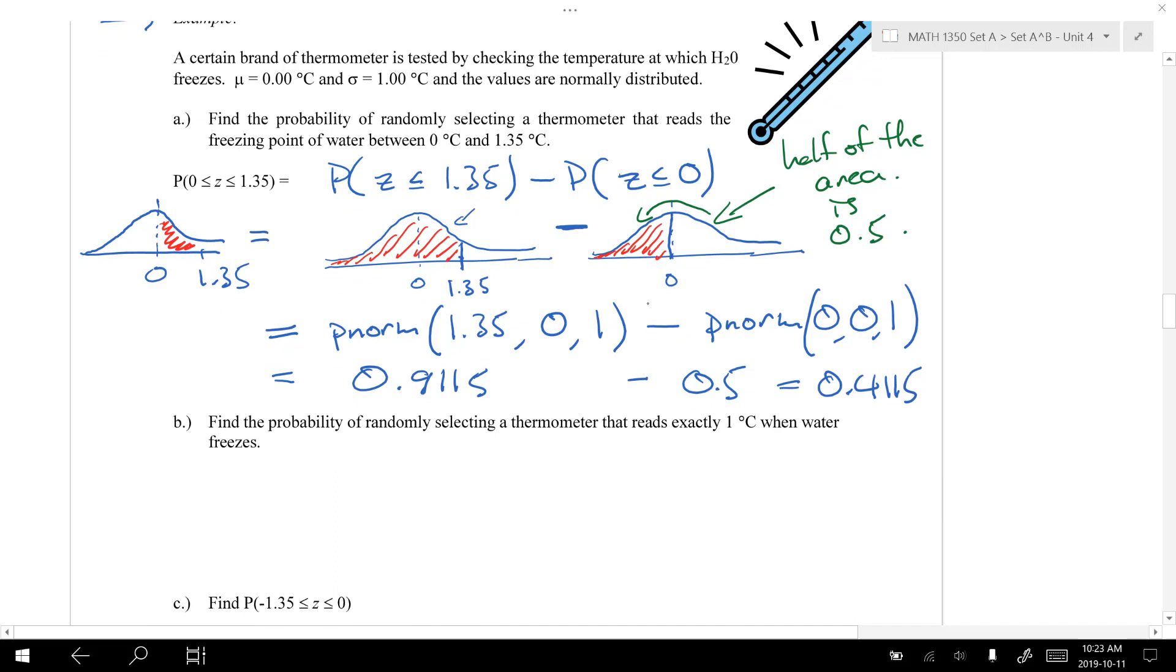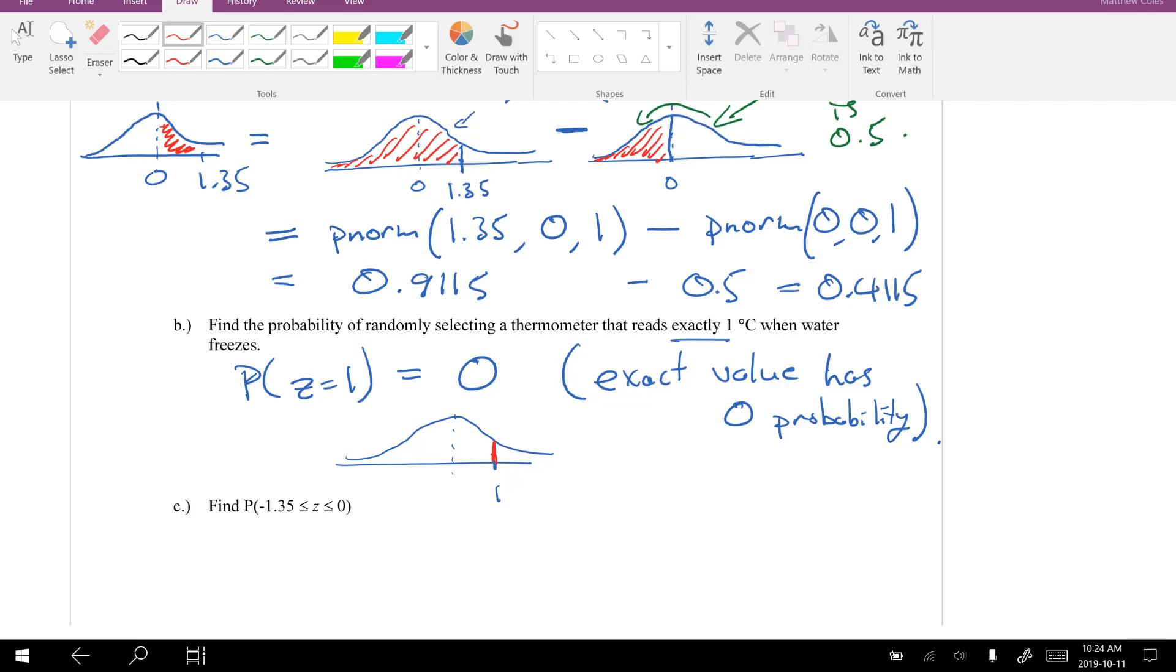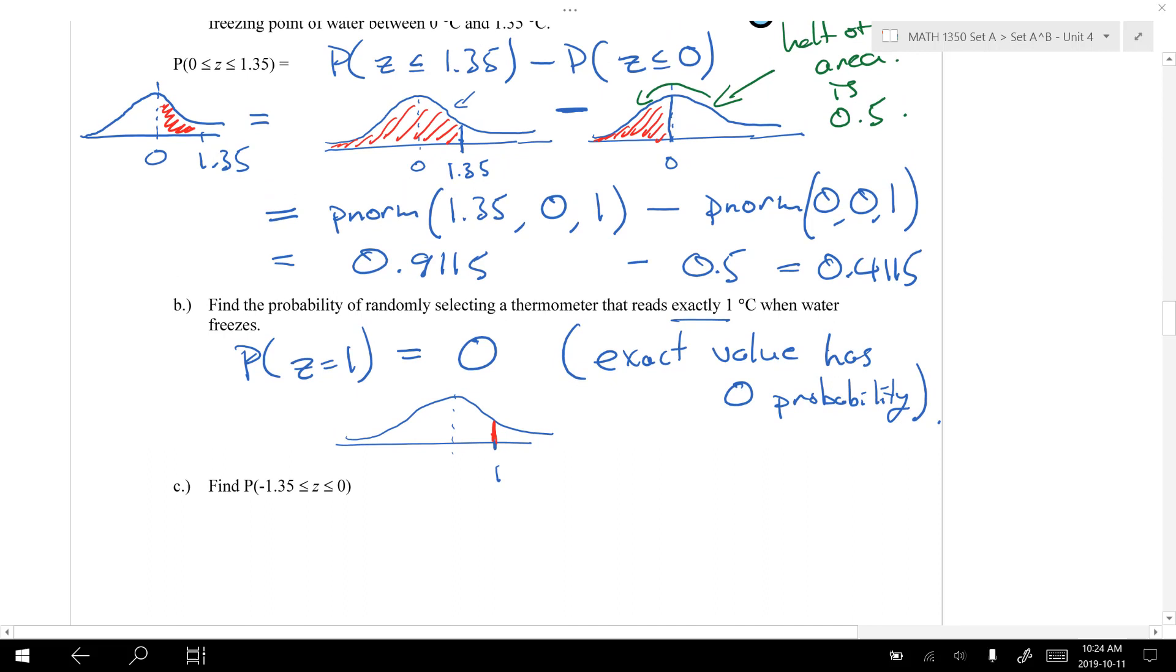So that's part A. Let's go through and solve a couple more problems to get to grips with how this is working. So we can ask this question here. What's the probability of selecting a thermometer that reads exactly 1 degrees Celsius? You may recall from earlier there's no area associated with just a single value. There's no range here. And so there's 0 probability here since it's an exact value. Exact value has 0 probability.